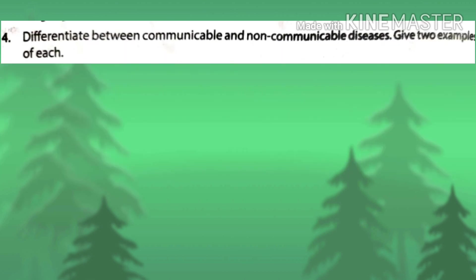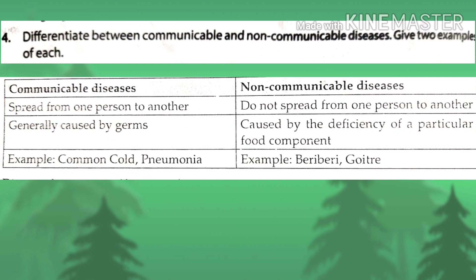Fourth question: differentiate between communicable and non-communicable diseases with two examples each. Communicable diseases are those that spread from one person to another, while non-communicable diseases do not spread from one person to another. Communicable diseases are generally caused by germs, while non-communicable diseases are caused by deficiency of a particular food component. Examples of communicable diseases: common cold, pneumonia. Examples of non-communicable diseases: beriberi, goiter.